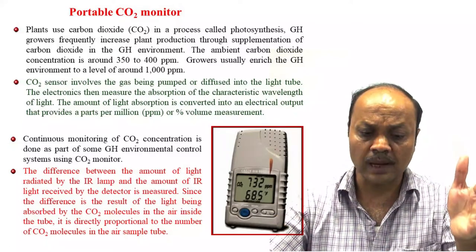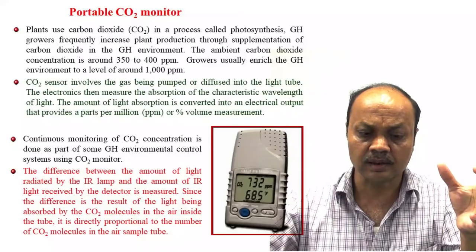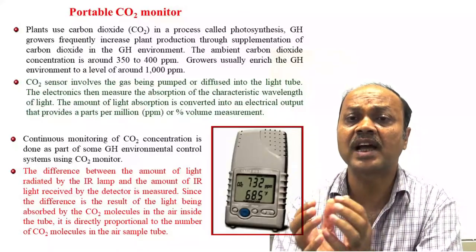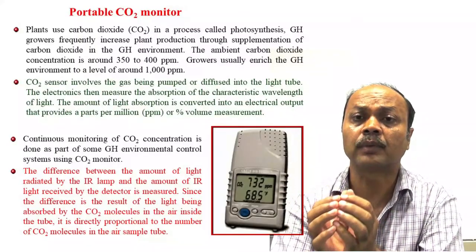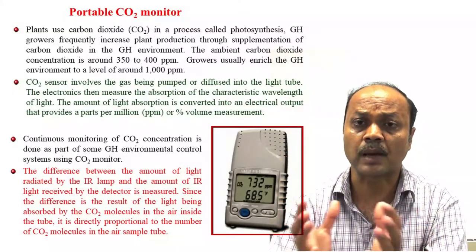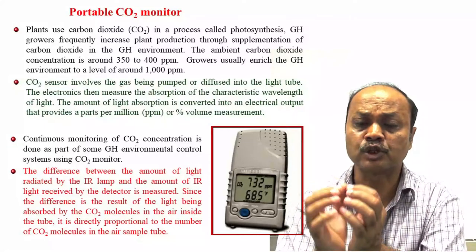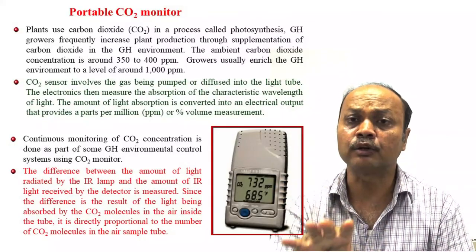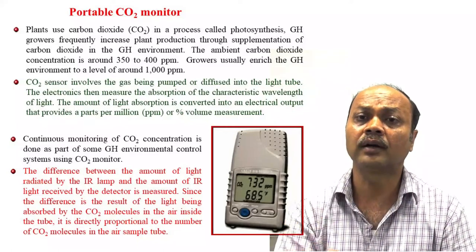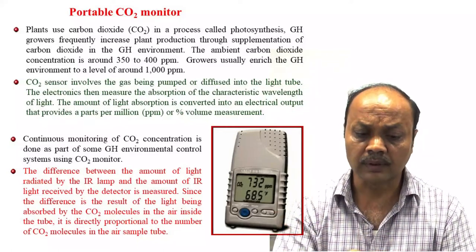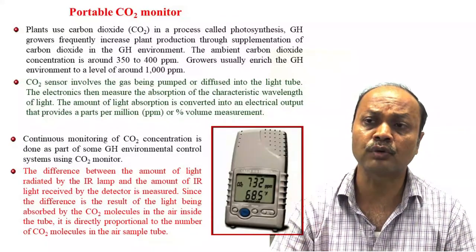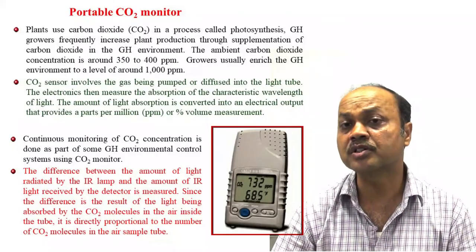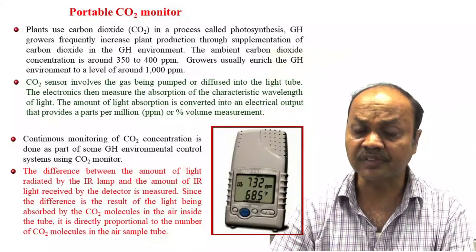The CO2 monitor works as follows: there are two types — an infrared lamp on one side and a detector on the other. Each gas absorbs infrared light at particular wavelengths. When infrared light is radiated through the air sample, CO2 absorbs at its characteristic wavelength. The absorbed amount is detected and calibrated to give the CO2 concentration inside the greenhouse. This is a very common and important instrument for precise greenhouse management.